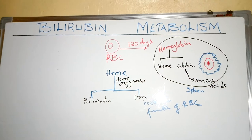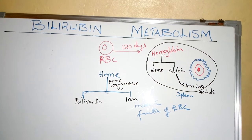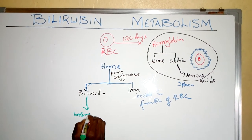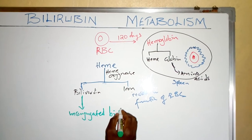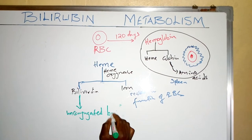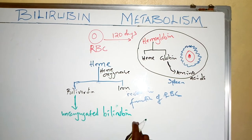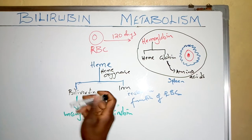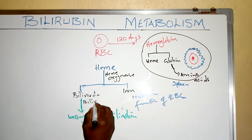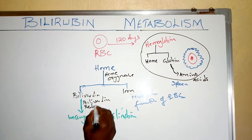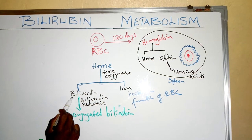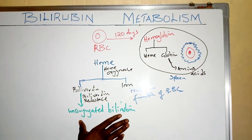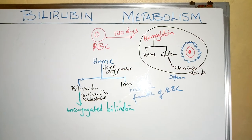The biliverdin will further be broken down into unconjugated bilirubin. The enzyme that breaks down biliverdin is called biliverdin reductase. It is this enzyme that degrades biliverdin to change it into unconjugated bilirubin.